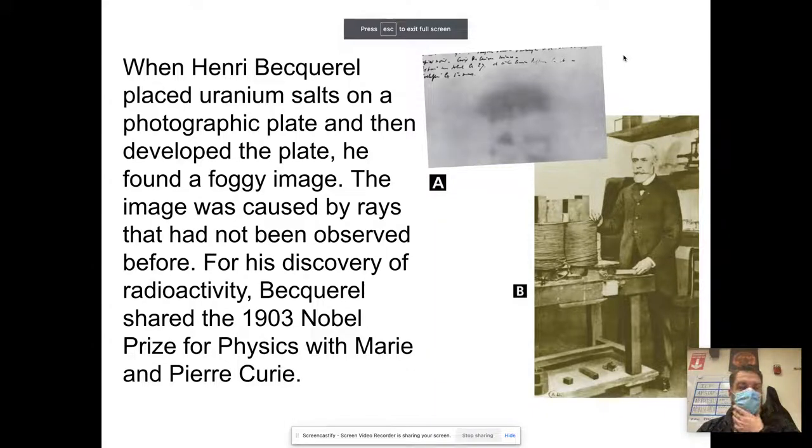I'm going to talk to you guys a little bit about uranium salts on a photographic plate. Basically, a scientist a long time ago put these uranium salts on a photographic plate and he noticed that there was an image that developed on the plate. It was just an accident.